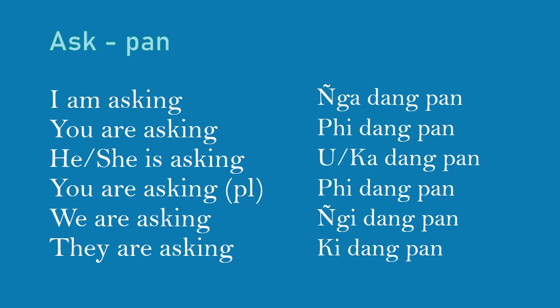Example with 'ask' (PAN — with an R sound): I am asking — Nga DANG PAN. You are asking — Pi DANG PAN. He or she is asking — U DANG PAN or Ka DANG PAN. We are asking — Ngi DANG PAN. They are asking — Ki DANG PAN.